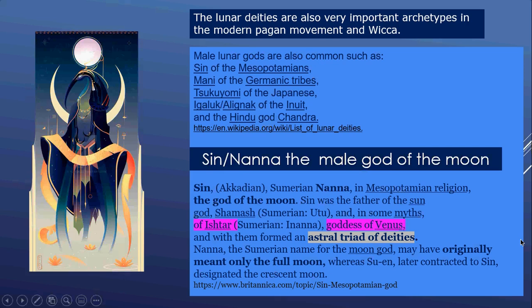The lunar deities are also very important archetypes in the modern pagan movement and Wicca. The male lunar gods include Sin from Mesopotamia, Manni of the German tribes, the Japanese, the Inuit, and the Hindu god Chandra. Sin or Nanna, the male god of the moon, was considered the father of the sun, Shamash, and other myths of Ishtar created a triad between the moon, sun, and stars.